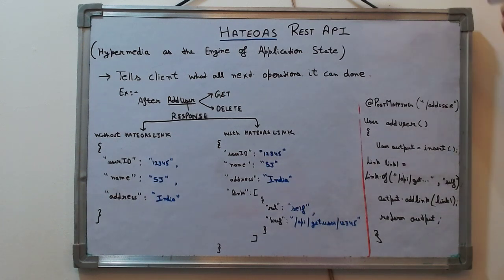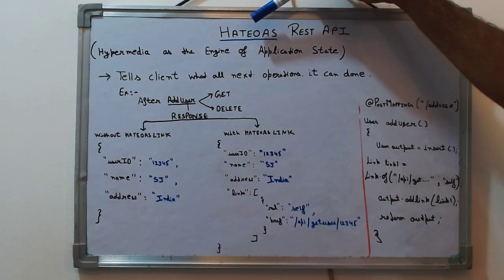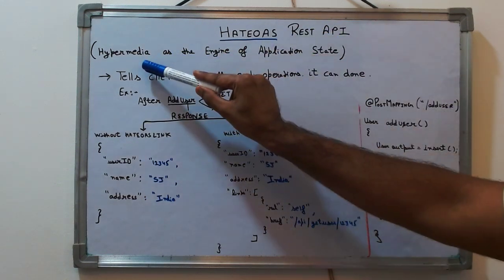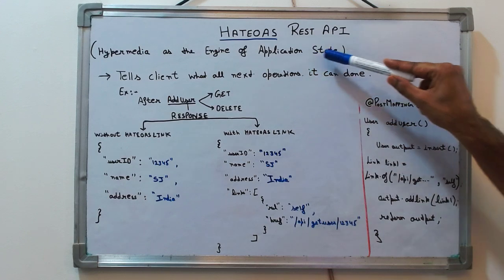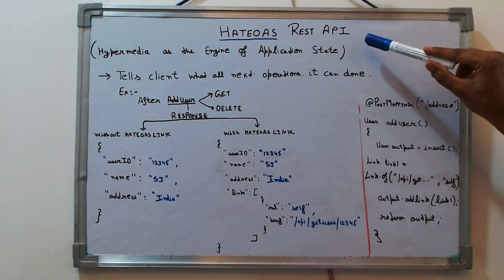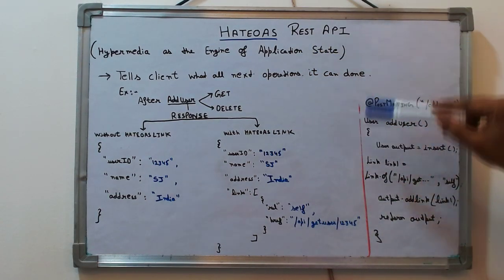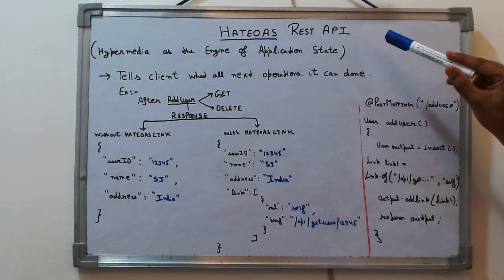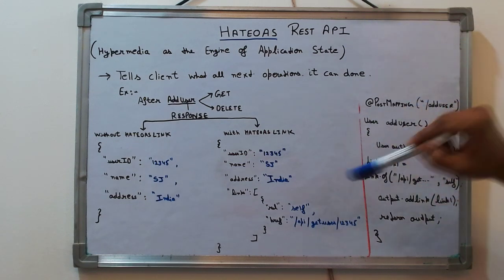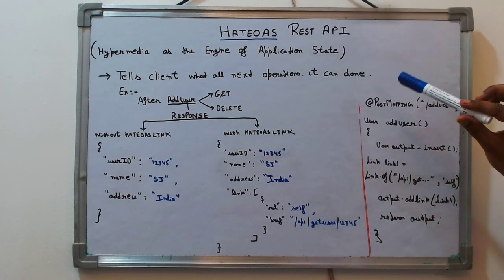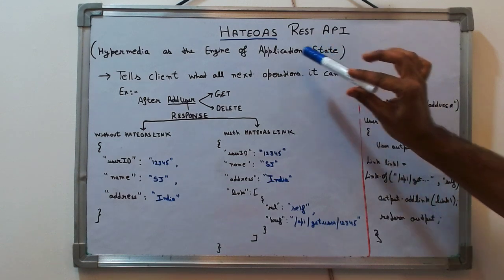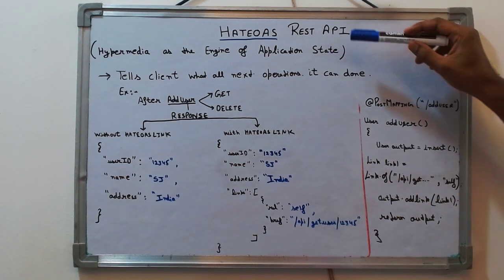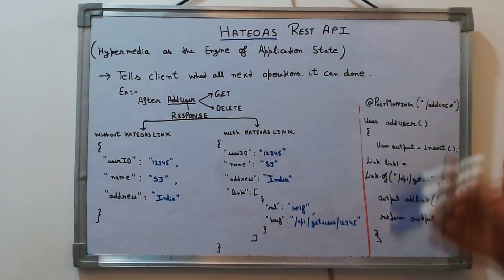Hey guys, Sreyandr this side, and today in 10 minutes I will try to cover HATEOAS REST APIs. It's a weird name — HATEOAS stands for Hypermedia as the Engine of Application State. I have done a complete in-depth HATEOAS concept and coding in the Springboard playlist. Consider this as an overview or recap, but if you want to learn in-depth, check out the Springboard playlist of Concept and Coding.